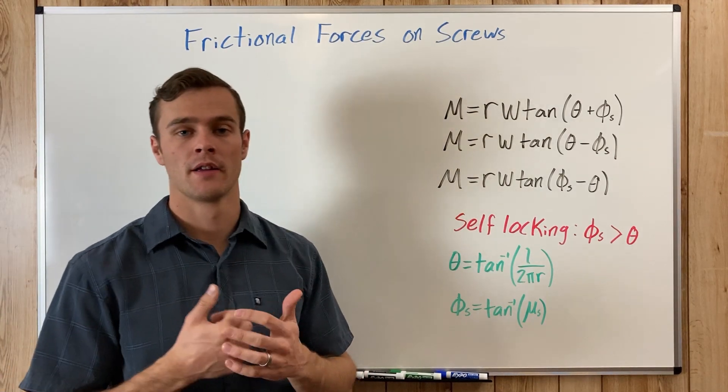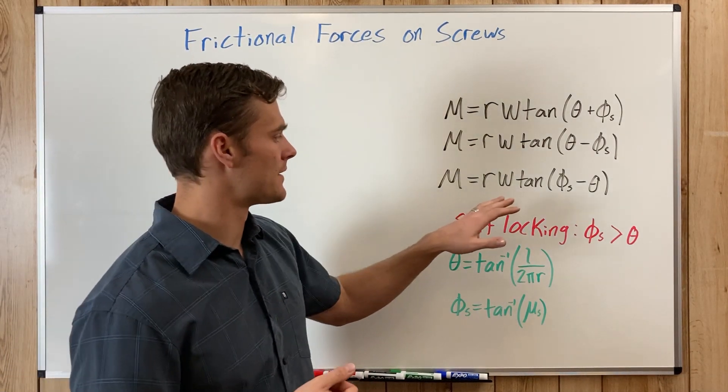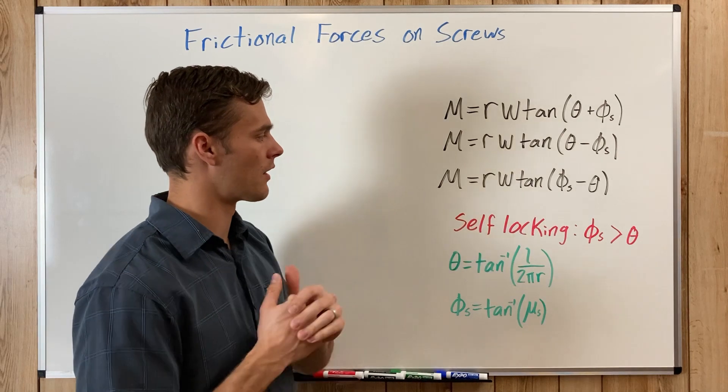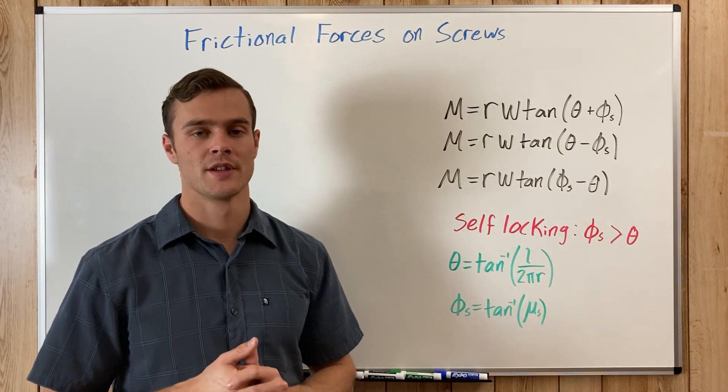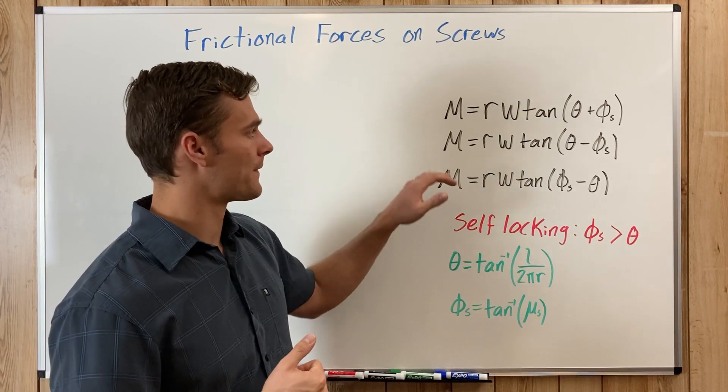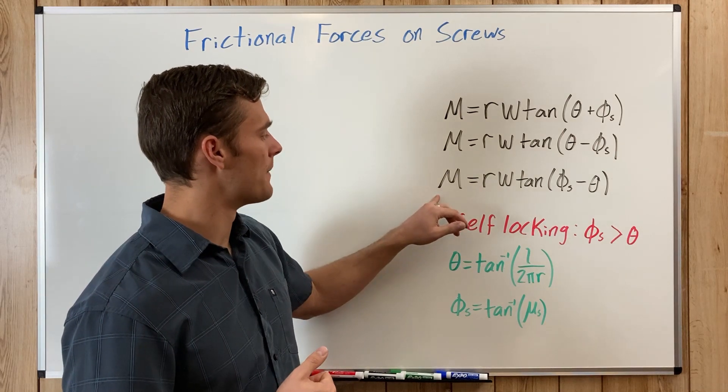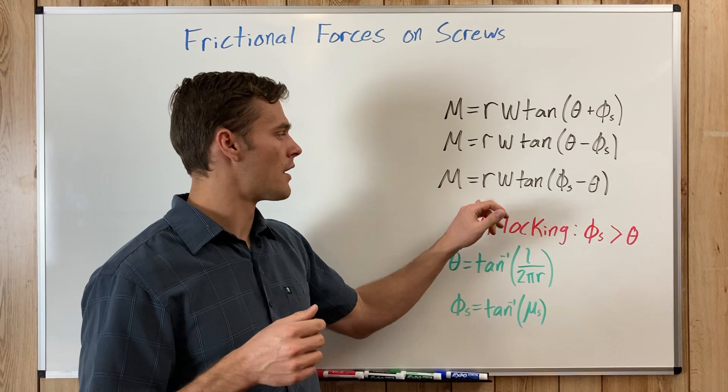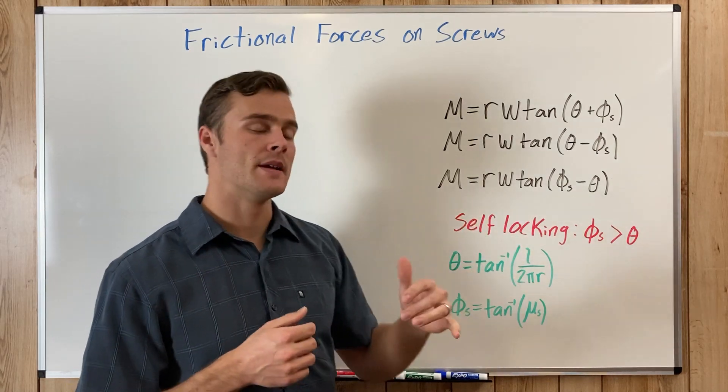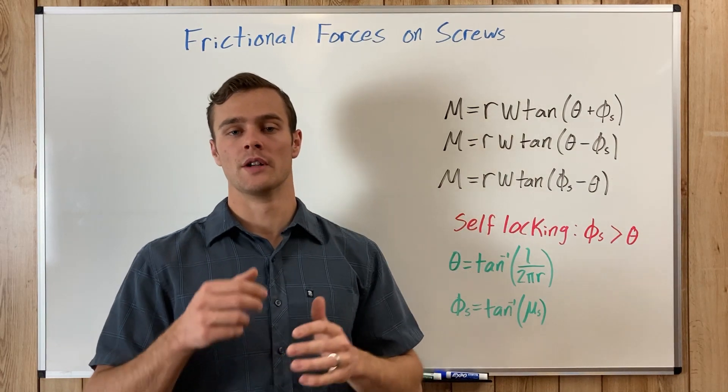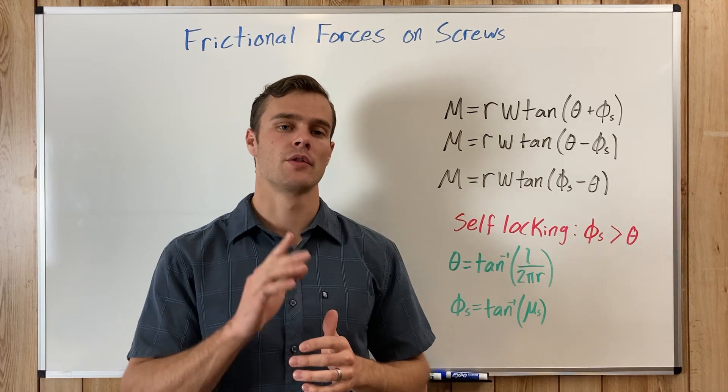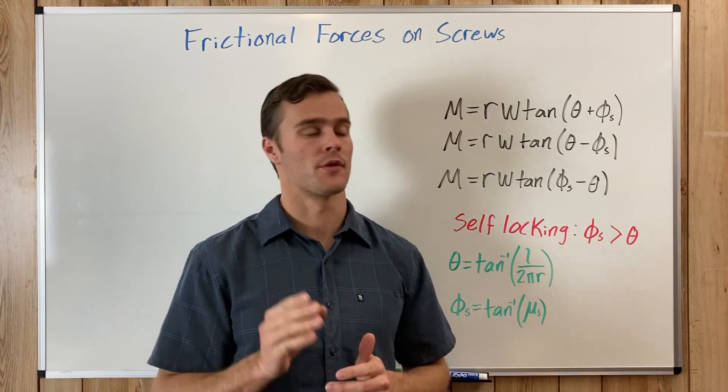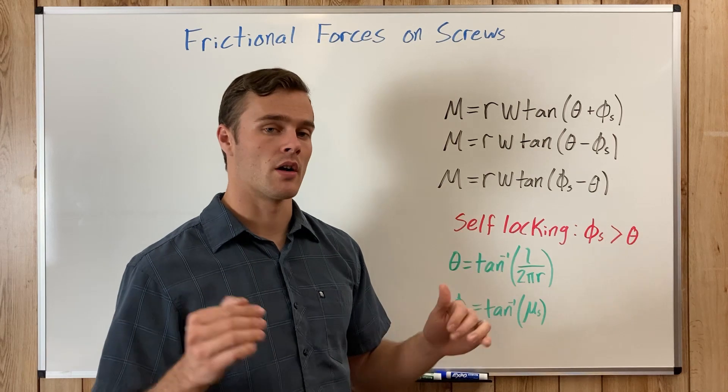The moment M is the moment needed to turn the screw. R is the radius, the mean radius of the screw, which goes from the center of the screw out to the middle of the threads. W is the weight pushing on the screw.